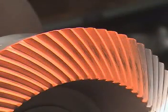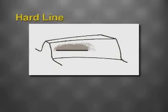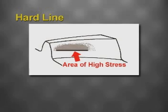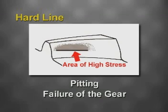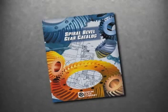However, correcting this problem by moving the shaft angle also requires modifications to the gearbox housing. When reviewing the contact pattern, a condition to look closely for is called hard line. A contact pattern with a hard line would look like this — instead of an elliptical shape, the bottom of the pattern ends abruptly in a hard line. This condition indicates that the gears are not making correct contact and are causing an area of high stress, which can cause pitting and subsequently failure of the gear.